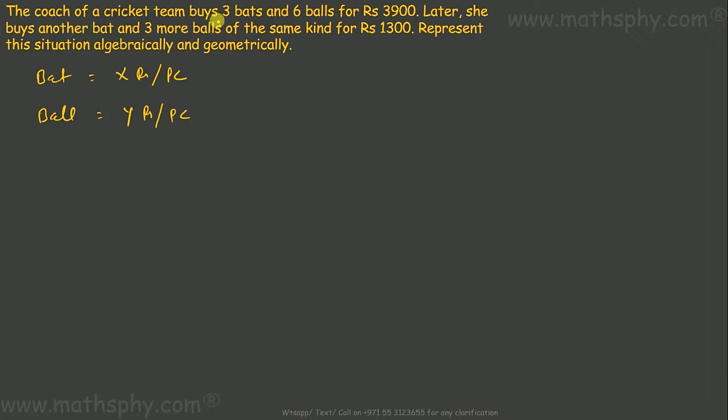Now it says coach buys 3 bats and 6 balls. 3 bats plus 6 balls. Bat is Rs x per piece and ball is Rs y per piece. And total she pays Rs 3900. That's my first equation.